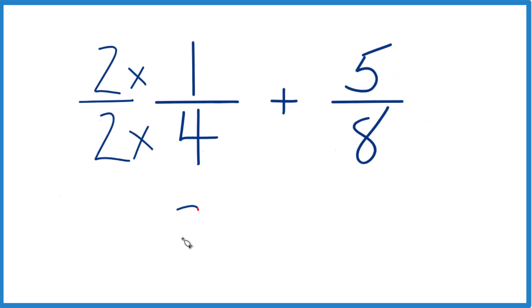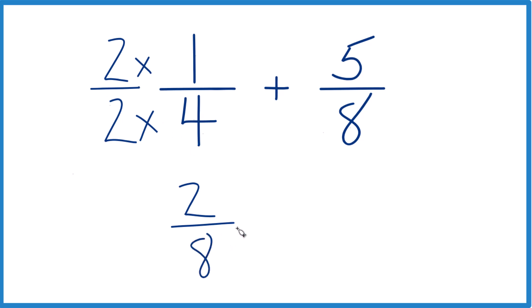So 2 times 1, that's 2, and 2 times 4 is 8, and over here we have 5/8.